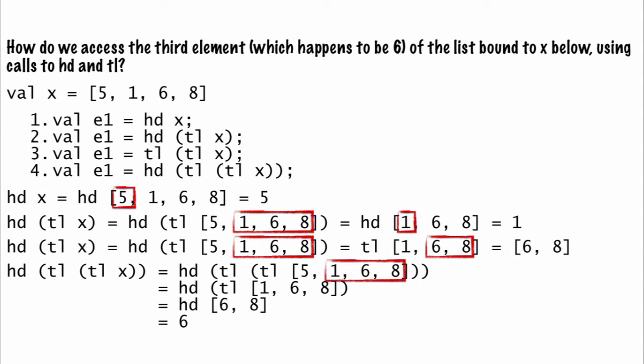Finally, starting from the innermost expression, the tail of x is the list 1, 6, and 8. The tail of that list is 6 and 8, and the head of that list is 6.